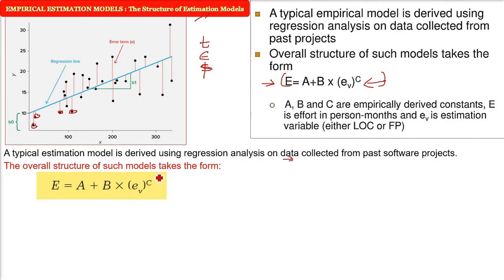It is E = A + B × (ev)^C, where A, B, and C are empirically derived constants. If you take a line y = mx + c, this is the standard line equation. y is dependent on x. x is the size here. m and c are constants. Try to make an analogy between this line and this expression of the estimation model.